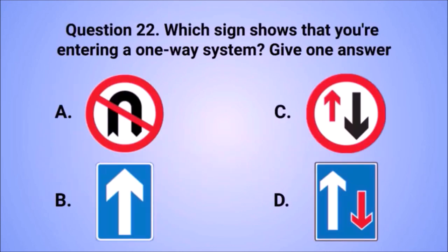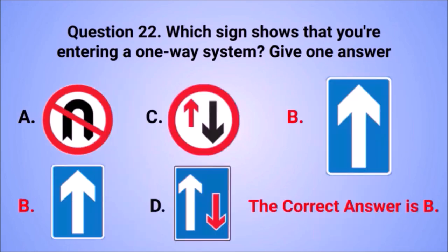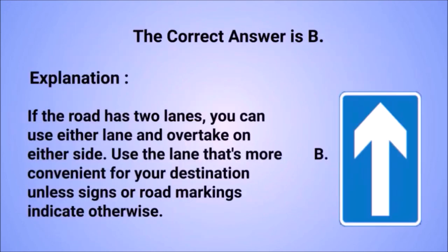Question 22. Which sign shows that you're entering a one-way system? The correct answer is B. If the road has two lanes, you can use either lane and overtake on either side. Use the lane that's more convenient for your destination unless signs or road markings indicate otherwise.